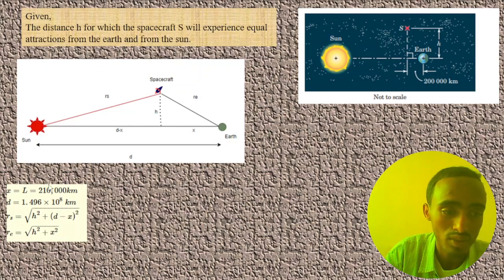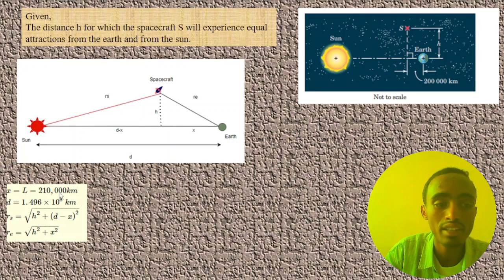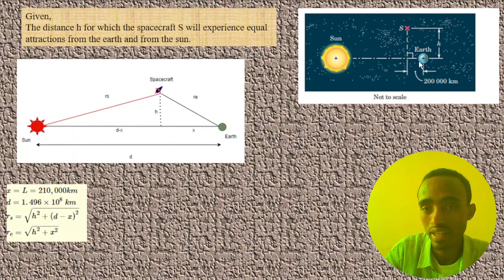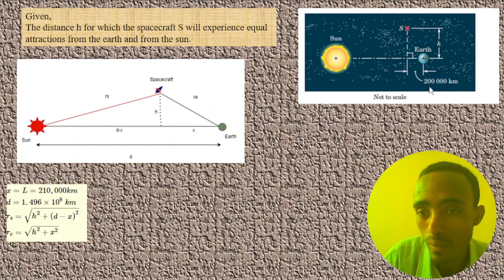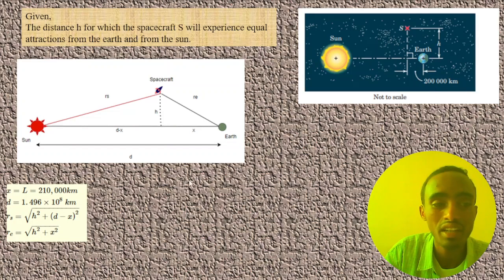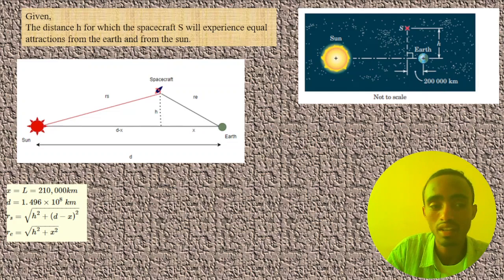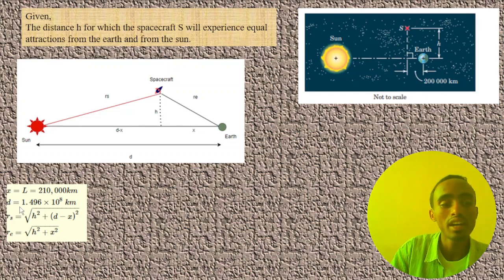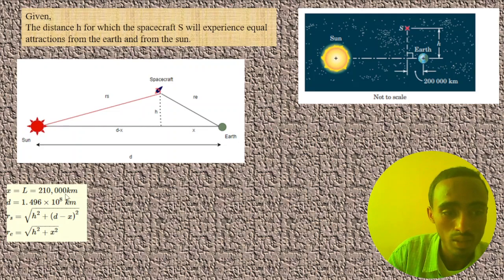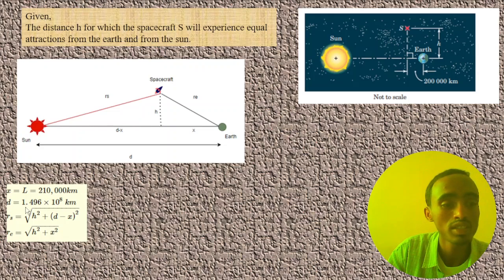Using the given values, X is a known quantity, and D equals 1.96 × 10⁸ kilometers, which is the distance between the Sun and the Earth.